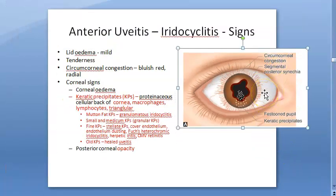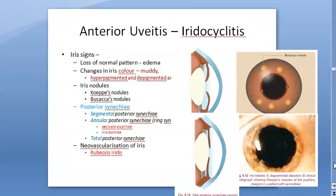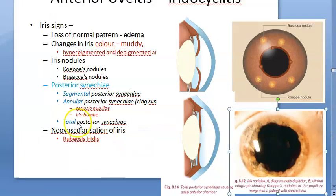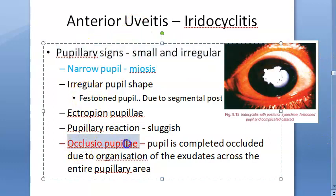Other signs of acute iridocyclitis: festooned pupil, circumciliary congestion, anterior chamber with aqueous cells, aqueous flare, hypopyon. Iris changes: muddy color. Koeppe nodules (on pupillary margin) and Busacca nodules (further away). Seclusio pupillae, iris bombé, and rubeosis iridis. Pupil is small and irregular in iridocyclitis.